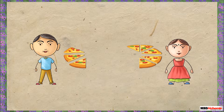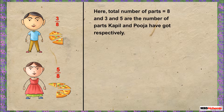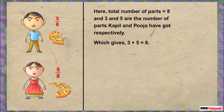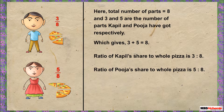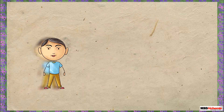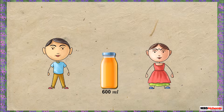We divide the pizza into eight equal parts, giving three parts to Couple and five parts to Puja. So Couple gets three-eighths (3/8) and Puja gets five-eighths (5/8) of the pizza. The ratio of Couple's share to the whole pizza is 3:8, and that of Puja's share to the whole pizza is 5:8.